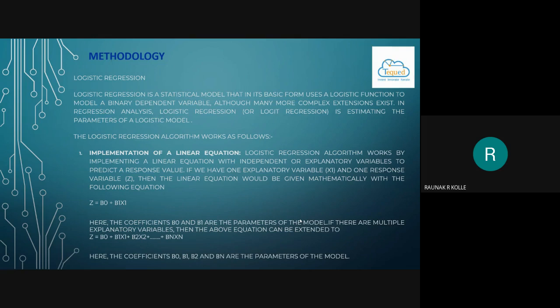The logistic regression algorithm works as follows: Implementation of a linear equation. Logistic regression algorithm works by implementing a linear equation with independent or explanatory variables to predict a response value. If we have one explanatory variable x1 and one response variable z, then the linear equation would be given mathematically with the following equation: z equal to beta0 plus beta1 x1, plus beta2 x2 and so on till beta n xn.